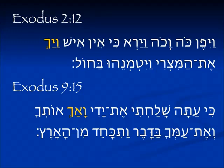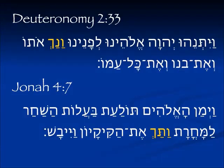Another example: Exodus 9:15 — ki ata shalachti et yadi vach otcha — and I smote you. The Aleph is for 'I will'; all we see is the Kaf. Here is the 'we' form in Deuteronomy 2:33 — vayetnehu Yehovah elohenu lefanenu v'nach otoh — and we smote him.